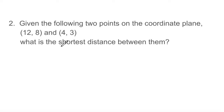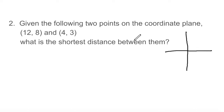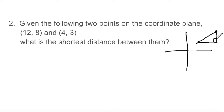Let's try another one. Here we have points (12,8) and (4,3). We'll make a right triangle where side A is the horizontal side and side B is the vertical side. If it helps to visualize, we can sketch these on the coordinate plane — (4,3) is here and (12,8) is up here. We're looking for the distance between them using A squared plus B squared equals C squared.